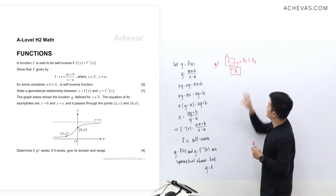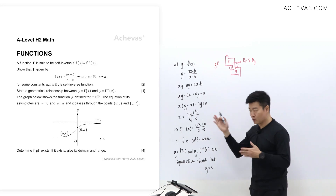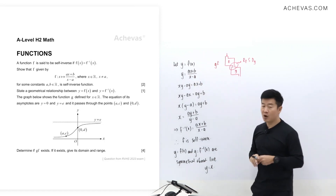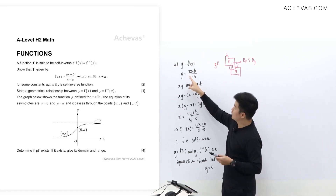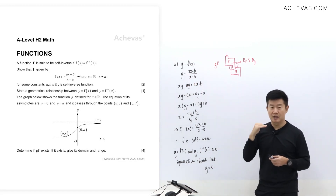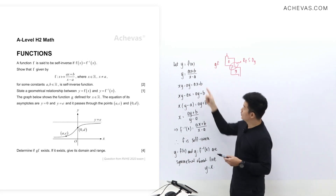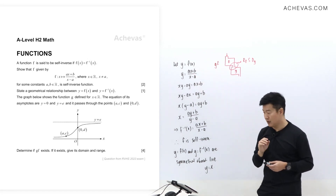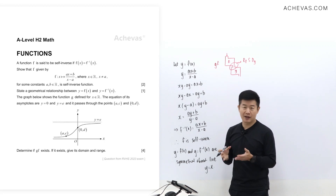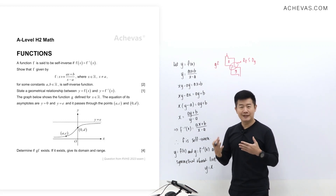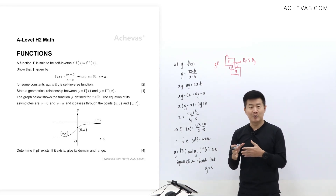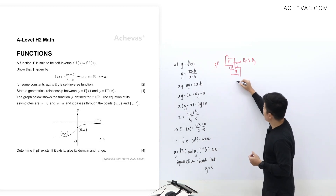The first thing we need is to find the range of f. According to the question, f(x) is a rational expression, so there will be a horizontal asymptote. The horizontal asymptote is found by taking the coefficient of x divided by the coefficient of x, giving y = a. The vertical asymptote, referencing the denominator, is x = a. The question doesn't tell us whether a is positive or negative, so I'll assume a is a positive number.